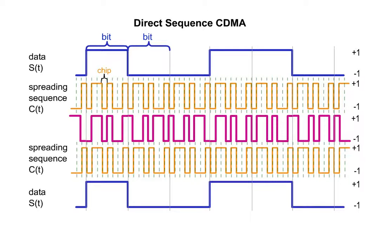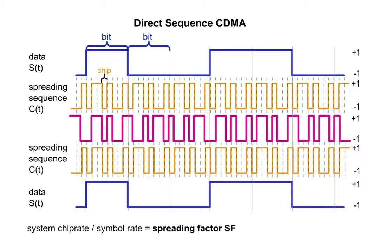The ratio of the system chip rate to the symbol rate is called the spreading factor, SF. The spreading factor describes the extent to which data has to be spread in order to occupy the whole bandwidth.